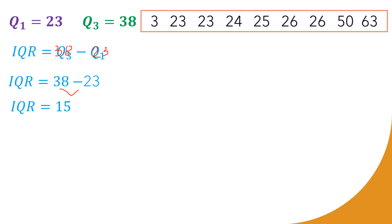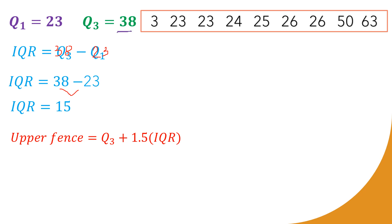Step four: we now set up the fences. Let us start with the upper fence: upper fence = Q3 + 1.5 × IQR. Our Q3 is 38 and our IQR is 15.